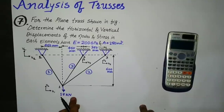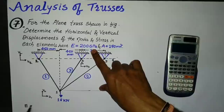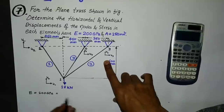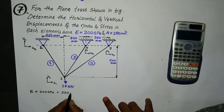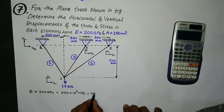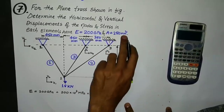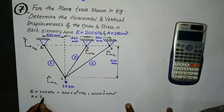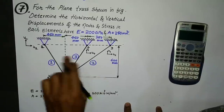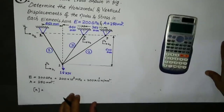A load of 18 kN is applied vertically at node 1. Converting units to millimeters: the Young's modulus is 200 × 10³ N/mm² (MPa), since 1 MPa = 1 N/mm². The area is 250 mm² for all three elements. E and A are the same for all three elements.